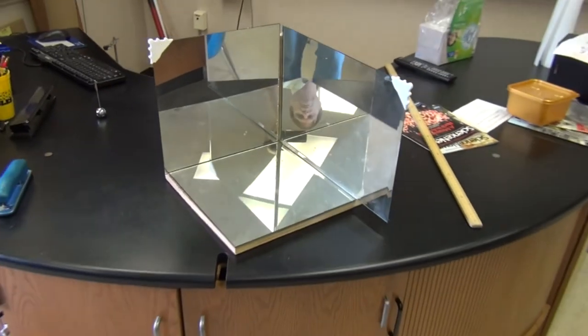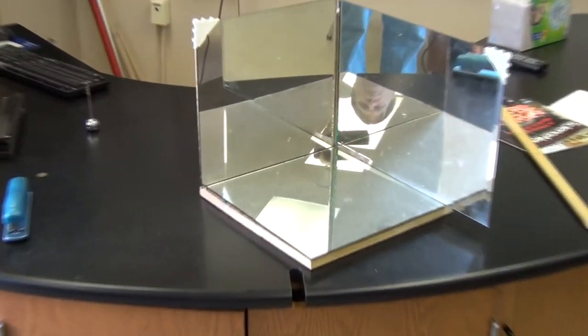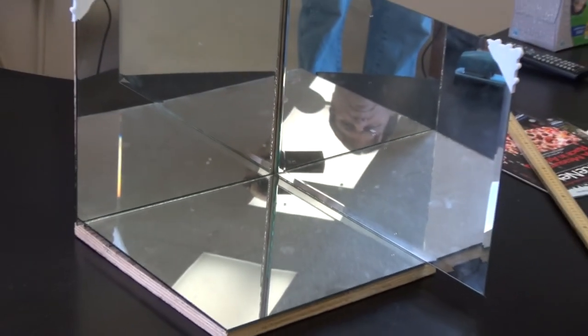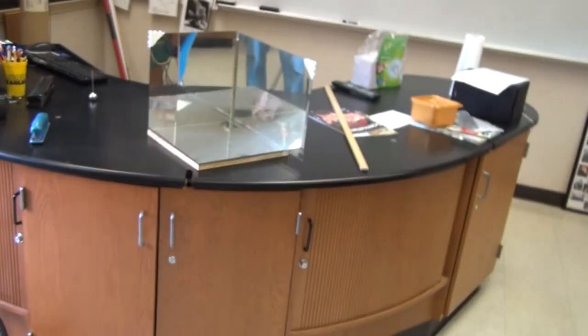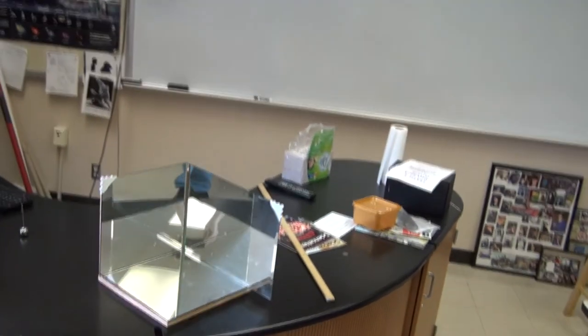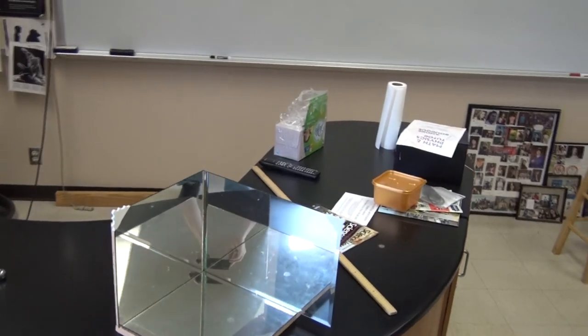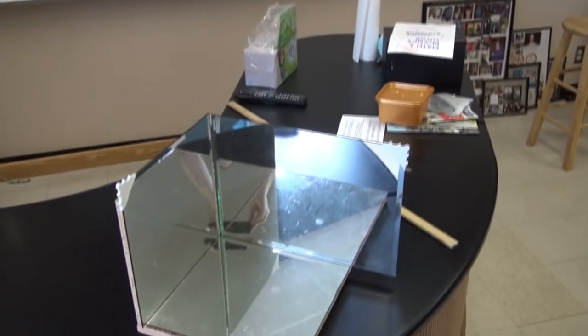This is a corner mirror. If you look straight into the center where the three mirrors meet, you will always see a reflection of your eye or the camera, no matter which angle you're looking from. One of these devices was left on the moon in order to return a laser beam and measure the Earth-moon distance from the time it takes the light to travel to the moon and back.